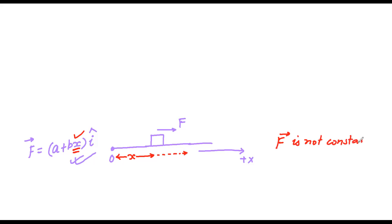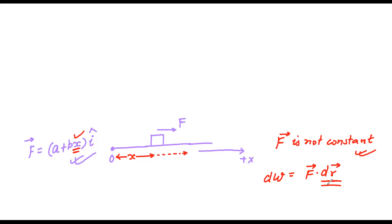Can we find the work done if the force is not constant? What do we do? We calculate a little bit of work: dW equals F dot dr, where dr is my infinitesimally small displacement.